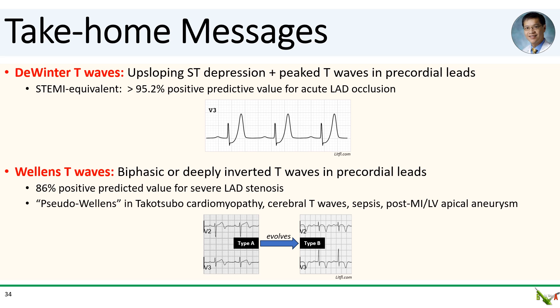Take-home messages. We looked at two T-wave patterns that should give you pause in the right patient scenario. The first is the DeWinter T-waves, which consist of upsloping ST depression followed by tall peaked symmetric T-waves in the precordial leads — these should be considered a STEMI equivalent and have a very high positive predictive value for acute LAD occlusion. The second is Wellens T-waves, which are biphasic T-waves in V2 and V3 evolving into deep T-wave inversions across the precordium, predictive of severe proximal LAD stenosis. Remember that there are numerous pseudo-Wellens scenarios without LAD stenosis, including Takotsubo cardiomyopathy, sepsis, post-MI with LV apical aneurysm, and cerebral T-waves after intracranial injury.